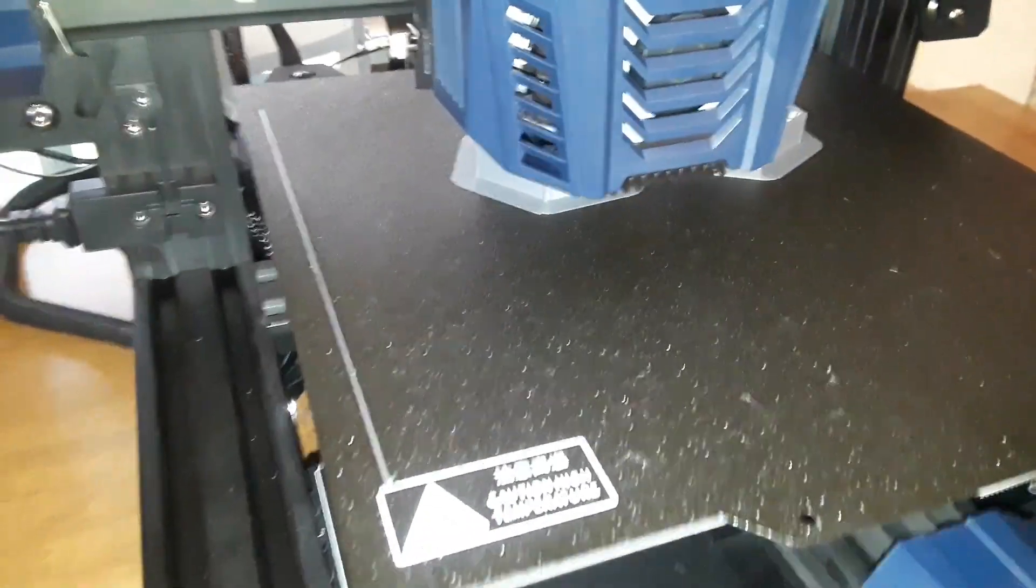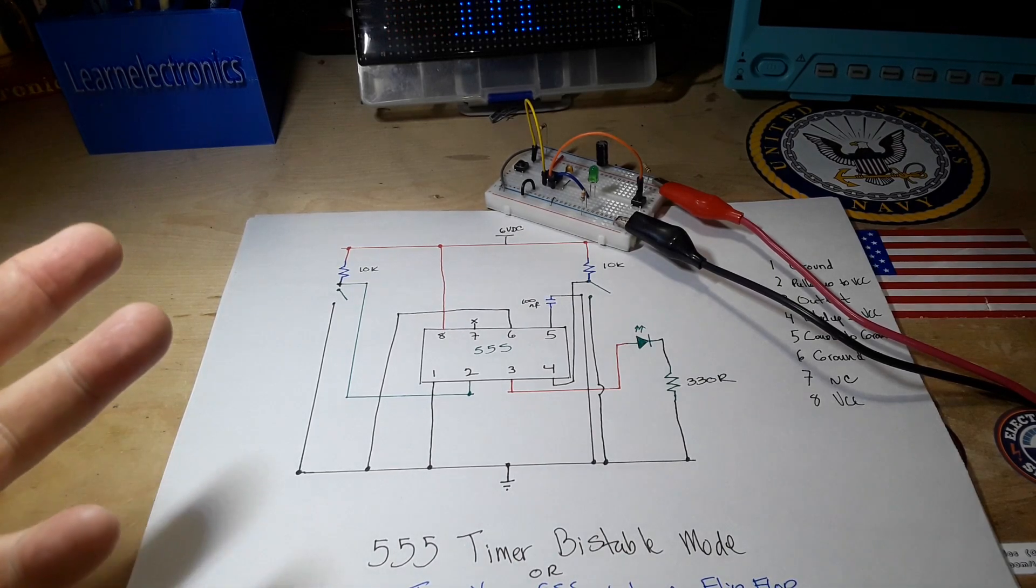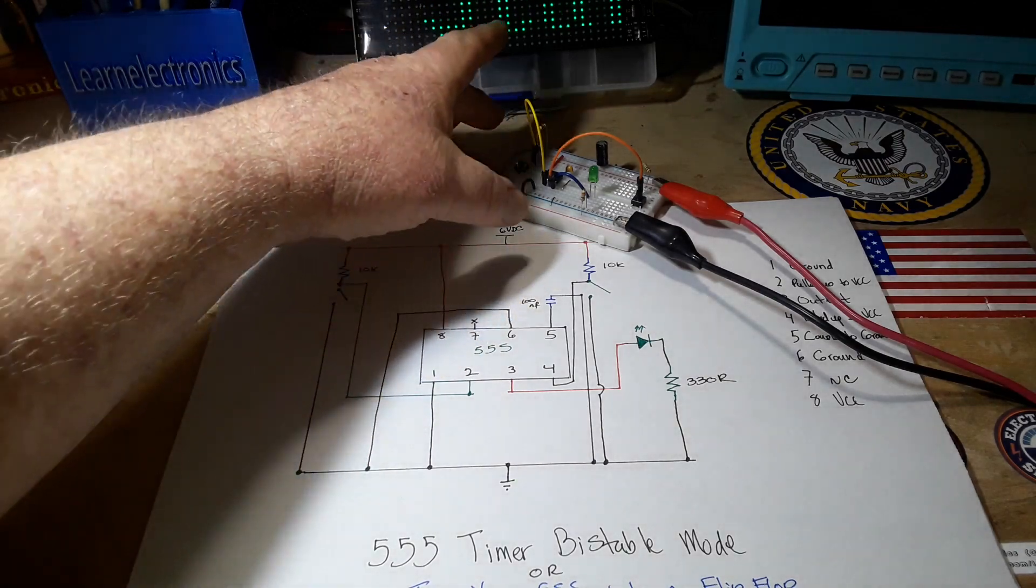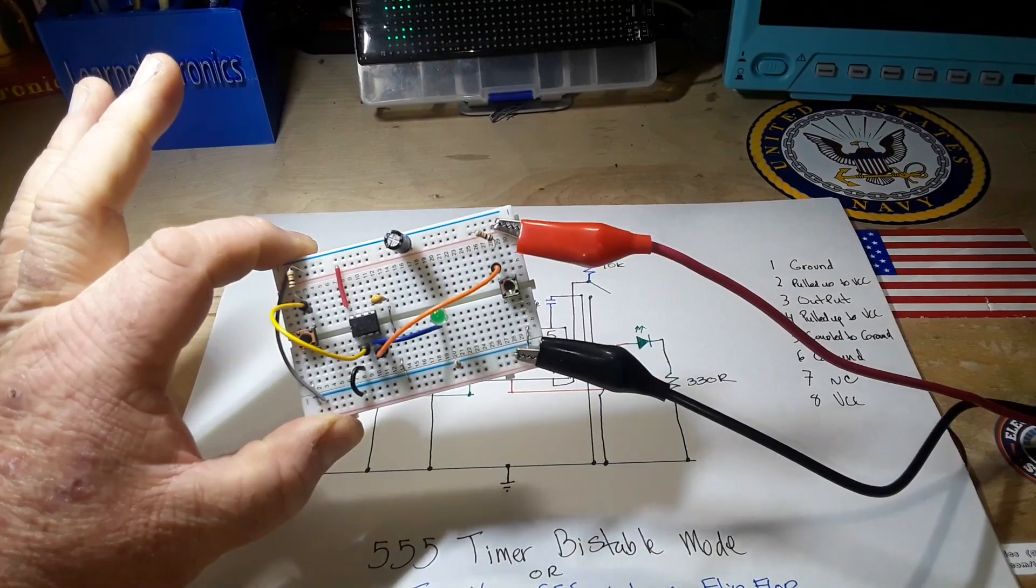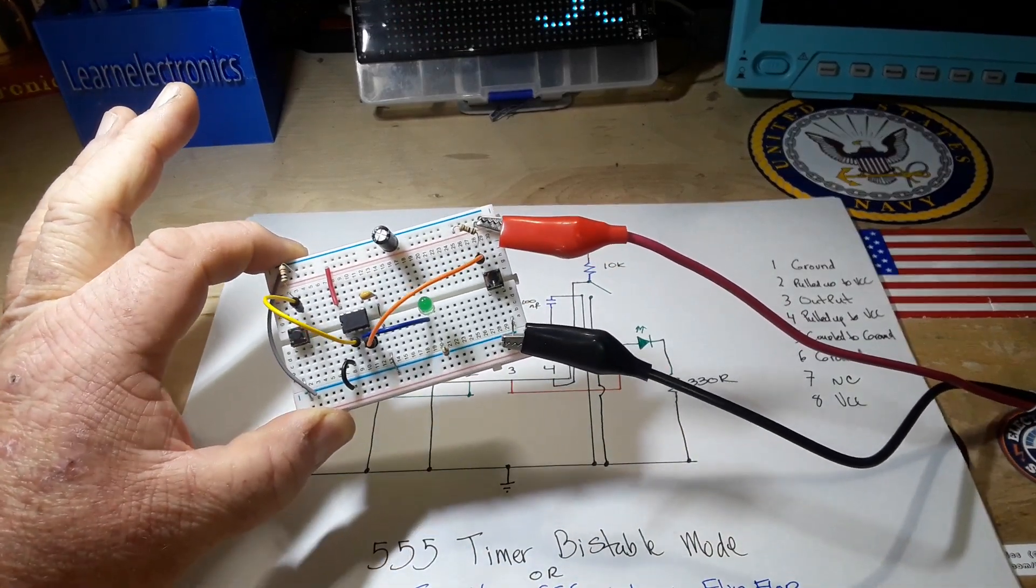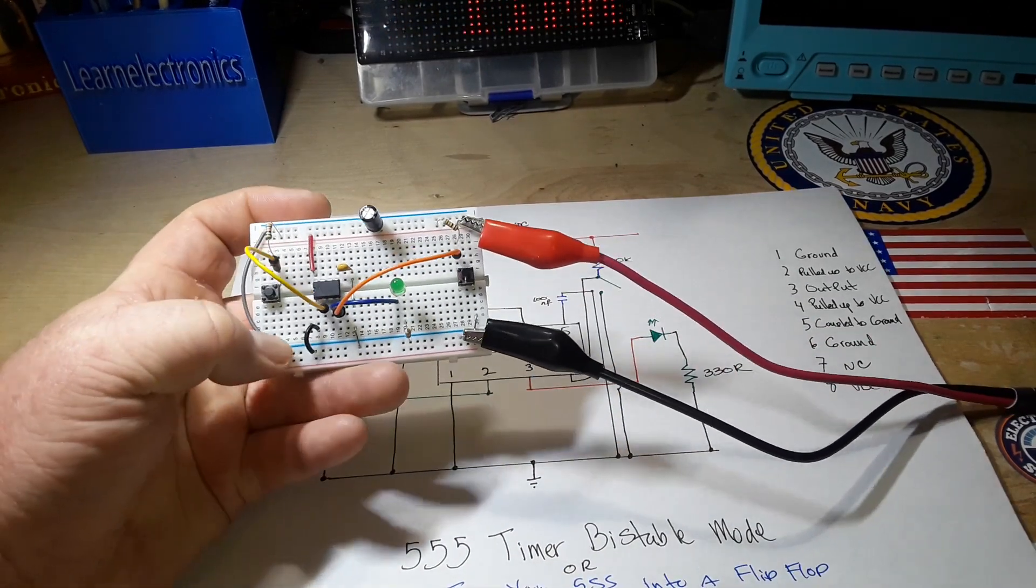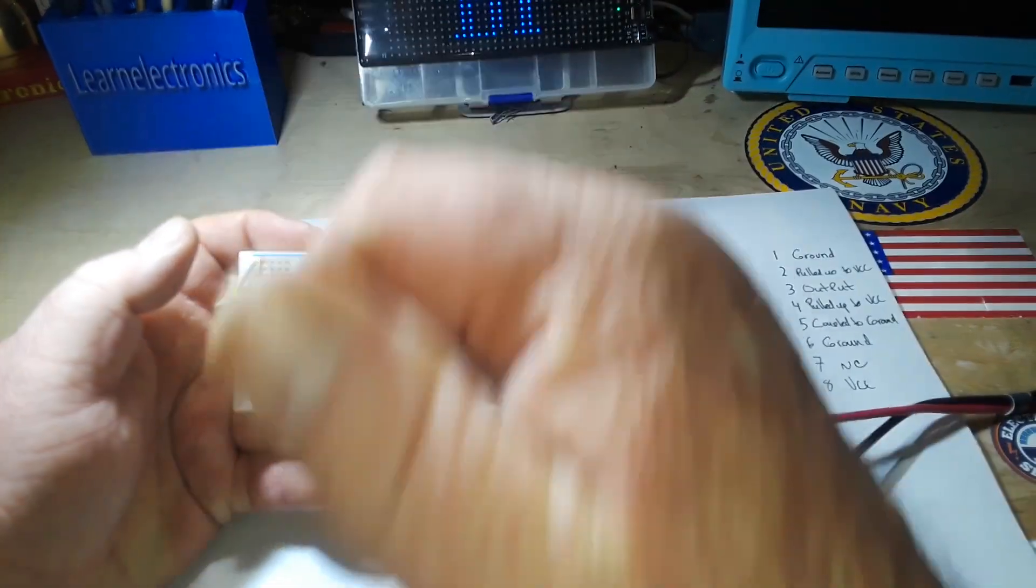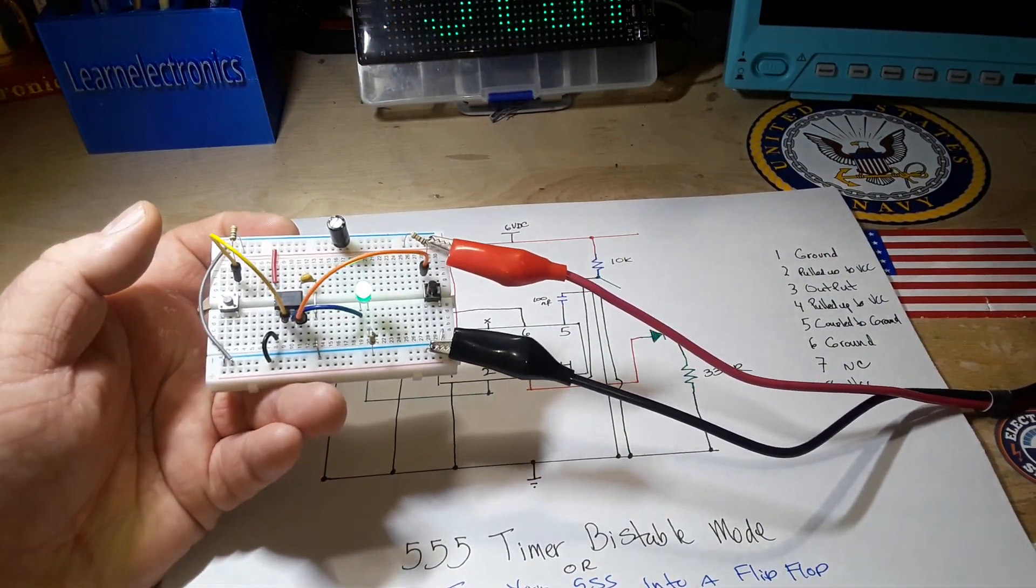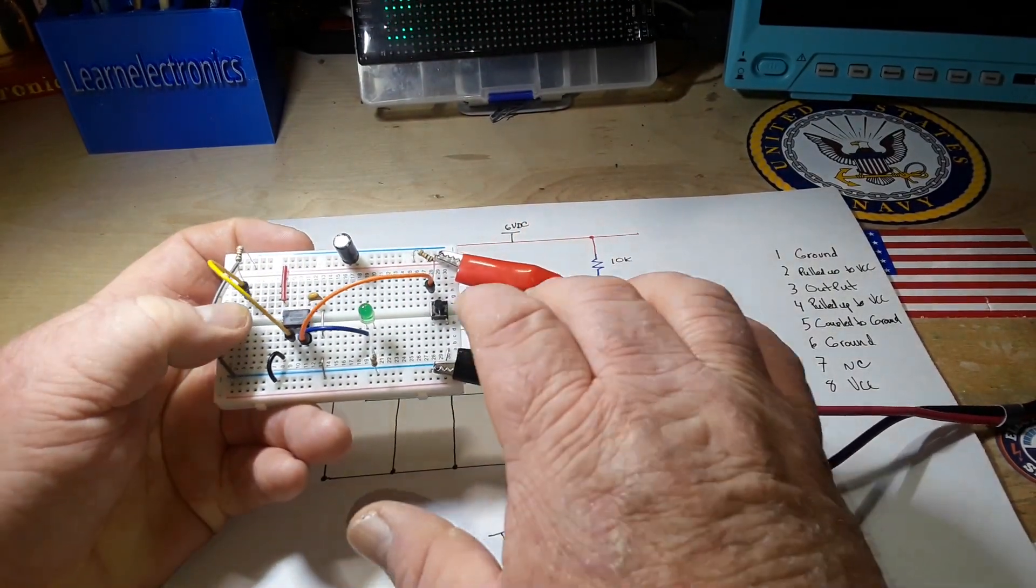The 555 timer, tell me a more versatile IC other than maybe just a general purpose op amp. The 555 timer set up in the bistable mode has two modes, on and off. If I click this button here, the LED lights. As you can clearly see, that LED is going to stay lit until I click this button.